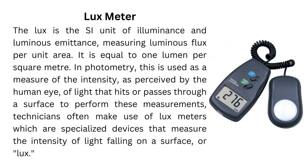Lux meter: the lux is the SI unit of illuminance and luminous emittance, measuring luminous flux per unit area. It is equal to one lumen per square meter. In photometry, this is used as a measure of the intensity, as perceived by the human eye, of light that hits or passes through a surface. Technicians often make use of lux meters, which are specialized devices that measure the intensity of light falling on a surface, or lux.